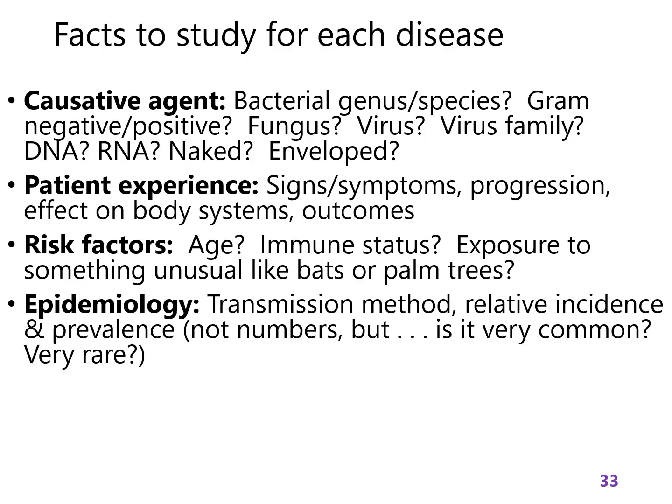Speaking of where diseases occur, look at the epidemiology — how is the disease spread, and how common is it? Sometimes I will give you incidence and prevalence numbers, and sometimes I won't. I don't want you to memorize the numbers; I want you to memorize whether this is extremely common — like malaria, where there are hundreds of millions of cases every year — or more like the meningoencephalitis caused by Naegleria fowleri, where there are like 10 cases per year. I want you to know where it falls on a scale of how common it is. On the test, I'll give you the number, and if you see 200 million, you know I'm not talking about the one that only causes 10 infections.